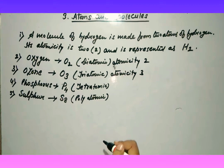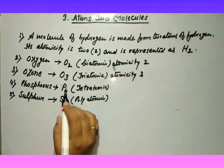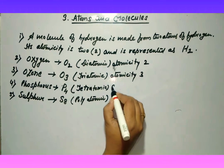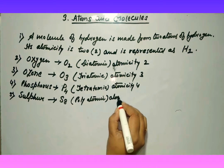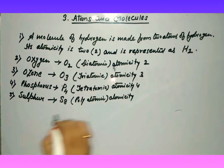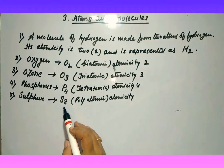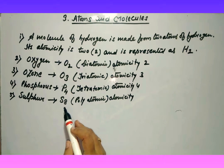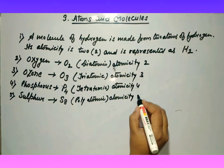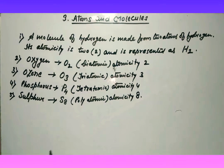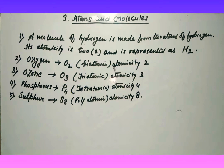Ozone - ozone kya hai? Yeh teen atom, oxygen ke teen atoms se bana hota hai, jise hum log kehte hain triatomic. Iska atomicity 3 hota hai. Phosphorus - P4 - yeh char atoms se bana hota hai same element ke, iska atomicity 4. And last one - sulfur - jise hum log polyatomic kehte hain. Poly means many. Sulfur 8 atoms same elements ke 8 atoms se bana hota hai, iska atomicity 8. So ise hum log kehte hain: diatomic, triatomic, tetraatomic, polyatomic. Monoatomic - mono means single.